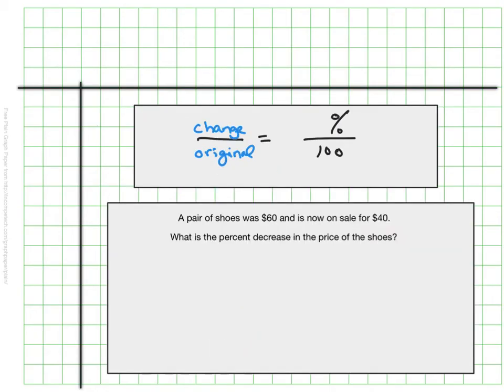That was an example of seeing percent increase or decrease in data and statistics, which we see a whole lot. But we also see it a lot with money. So here's an example with money and it's a pair of shoes that was $60 and now it's on sale for just $40. The question you might wonder is what the percent decrease in this case in the price of the shoes. So what percent are you saving by buying them on sale?